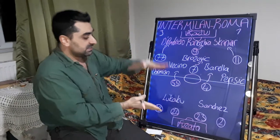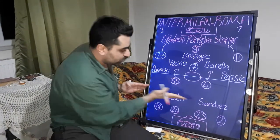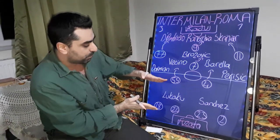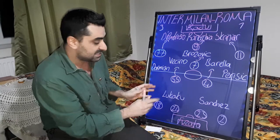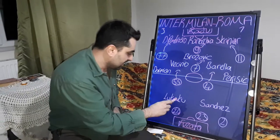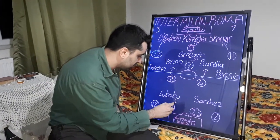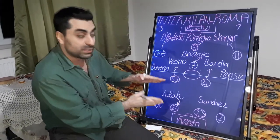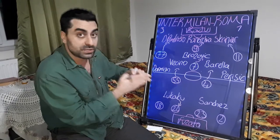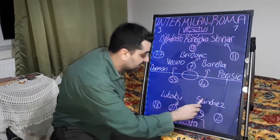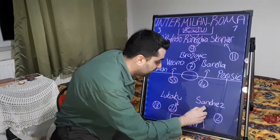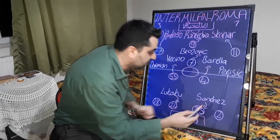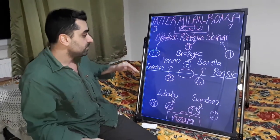Pedro played against defender Skriniar. On the forward line for Inter Milan, the two forwards Lukaku and Sanchez pressed on the centre-backs. Lukaku played 1v1 versus Kumbulla, who chased Lukaku everywhere on the pitch. And Alexis Sanchez played 1v1 versus the other central defender Mancini.